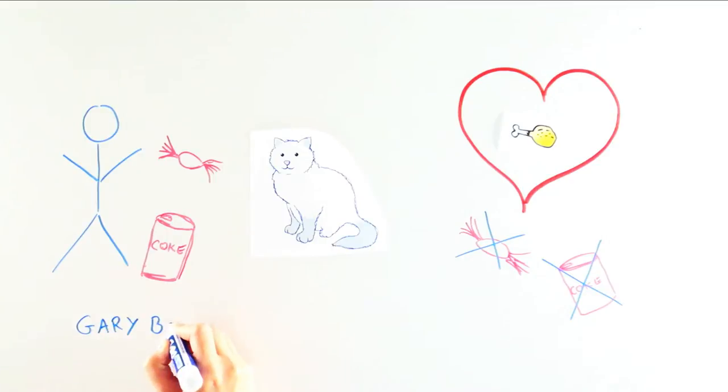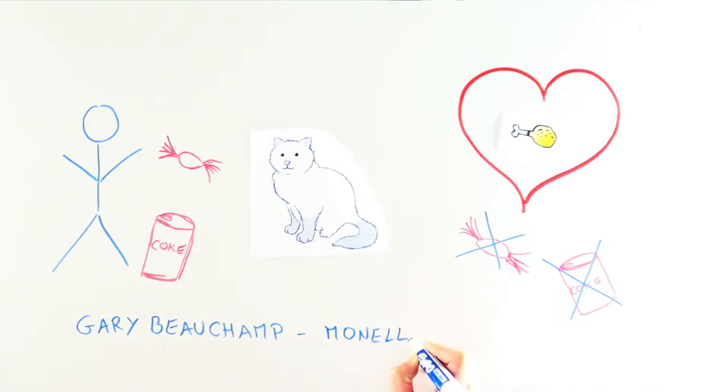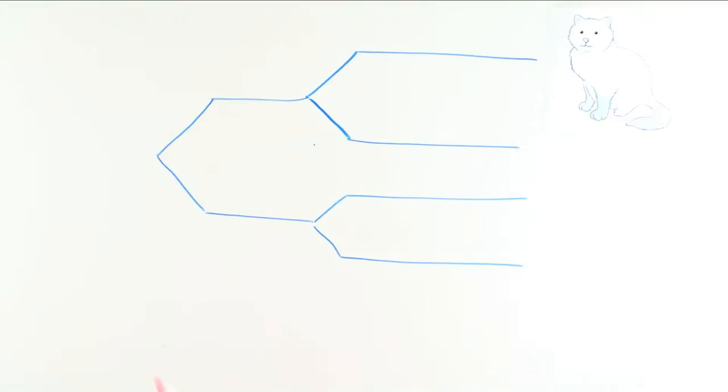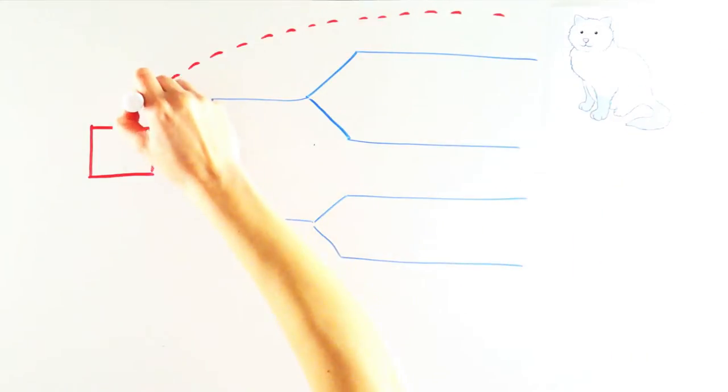It seems that millions of years ago, a common ancestor of all modern cats lost the ability to perceive sugars. But how do we know they lost it? What if they just never had the ability in the first place?